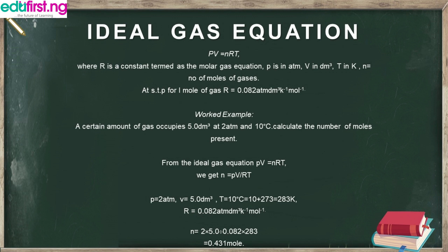Let's look at a worked example. A certain amount of gas occupies 5.0 dm³ at 2 atmospheres and 10 degrees Celsius. Calculate the number of moles present. We're looking for n. We have P = 2 atm, V = 5.0 dm³, R = 0.082, and T = 10°C which converts to 283 K. Inserting the figures: n = (2 × 5.0) / (0.082 × 283), which gives us 0.431 moles.